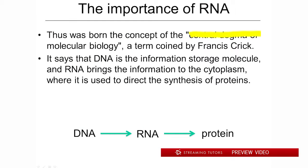He came up with an idea called the central dogma of molecular biology. Just for the record, the word dogma — in religion it means something that is the way it is and not to be questioned. Crick was asked about this later and said something like, 'I don't think I really knew what that word meant.' He just meant it was a strong hypothesis or a basic rule. It is a basic rule — not meaning there are never any exceptions, but it is a pretty good rule that applies most of the time in normal situations.